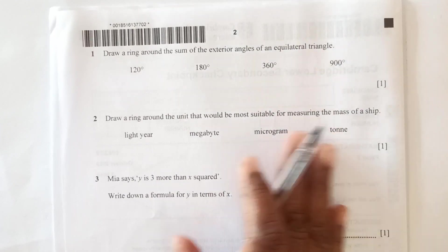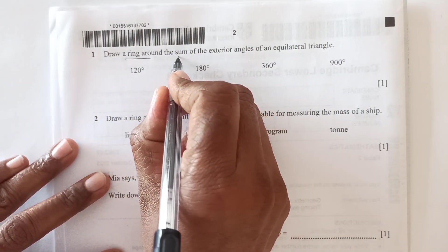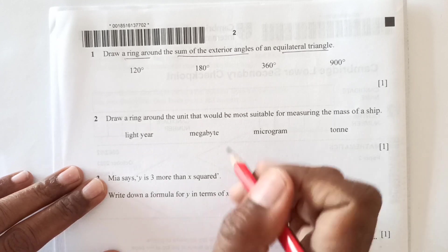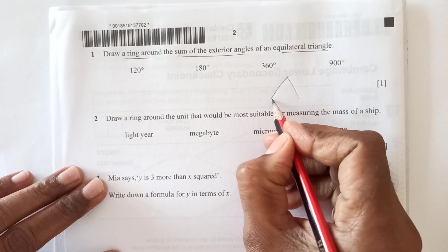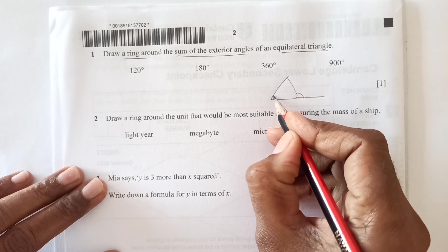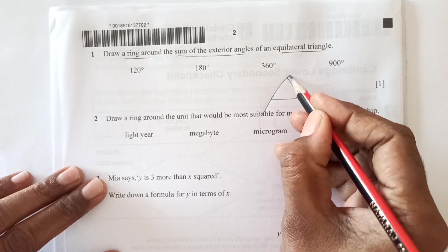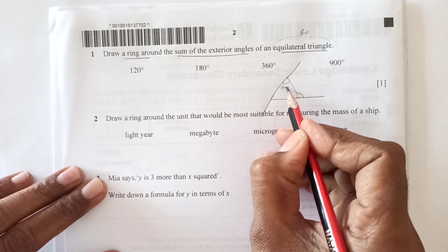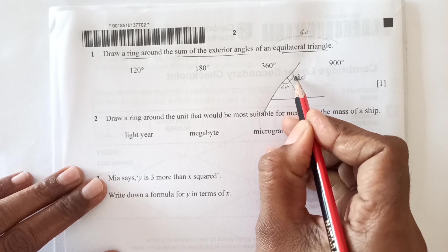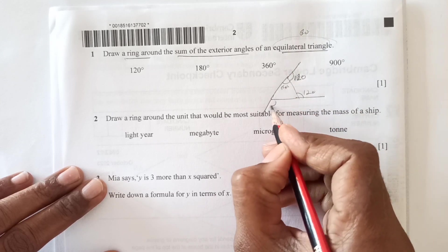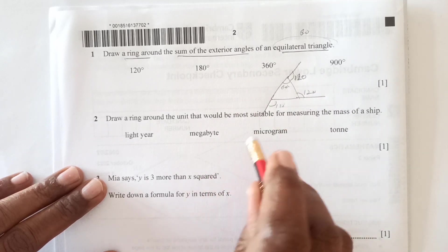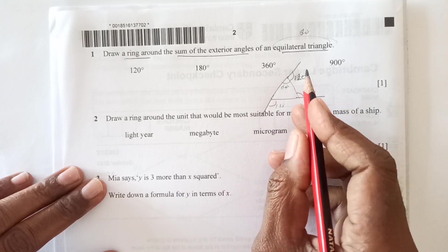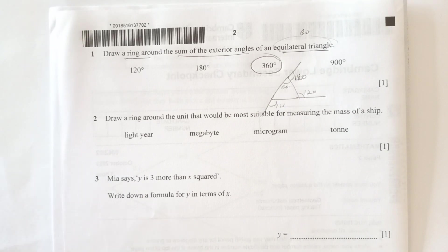Question number 1 that I can see here. Draw a ring around the sum of exterior angle of an equilateral triangle. Exterior angle is the angle which is outside of the triangle. So let us say this is the triangle and exterior angle is going to be this one like this. As you know that equilateral triangle have all interior angle 60 degrees. So if this is 60, this is going to be 120 to make the sum 180. So this is 120, this is 120. So exterior angle is going to be 360 degrees.